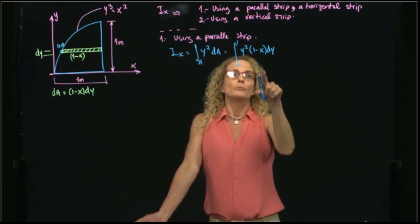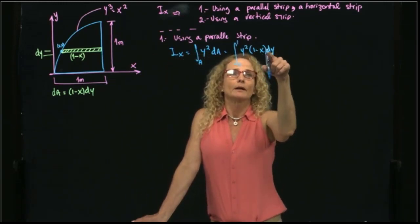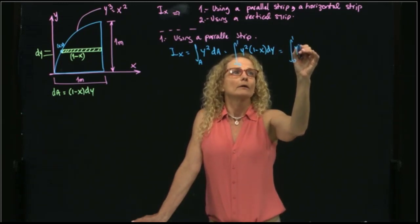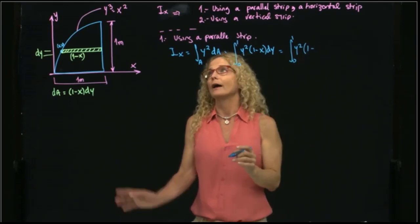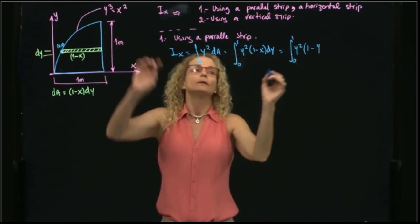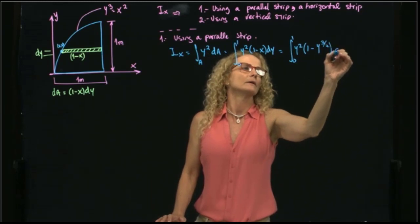And I have to put all the variables in terms of my variable of integration. Therefore, this is 0 to 1, y squared, 1 minus, and I solve for x, and I get y to the three-halves dy.